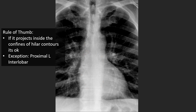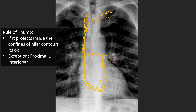As a good rule of thumb, if the catheter projects within the confines of the hilar contours it is generally okay. Here are the hilar contours and all the catheters we just looked at — for the most part these catheters project within the hilar contours within the proximal intralobar pulmonary arteries and the main pulmonary arteries. The exception is portions of the proximal left intralobar pulmonary artery, which can extend just beyond the hilar contour, and that's generally okay.